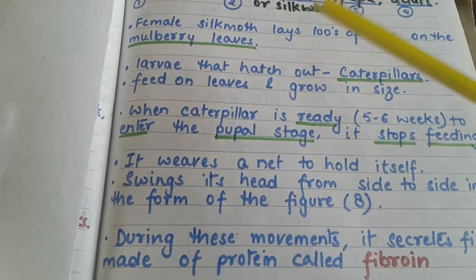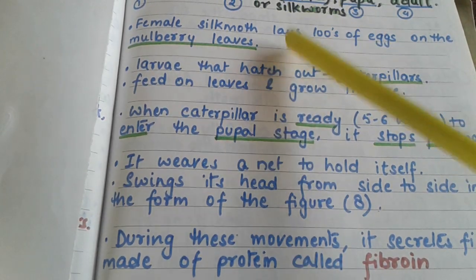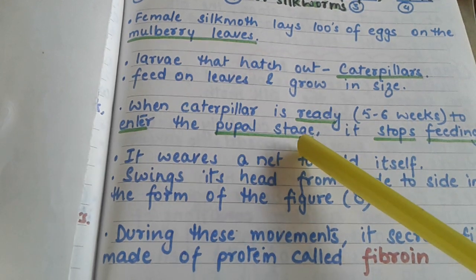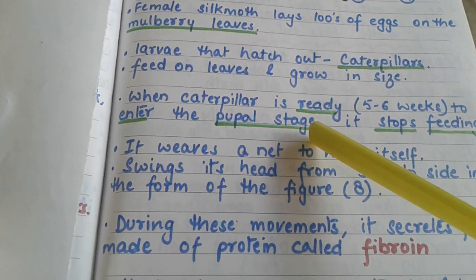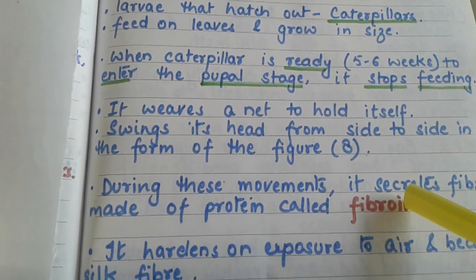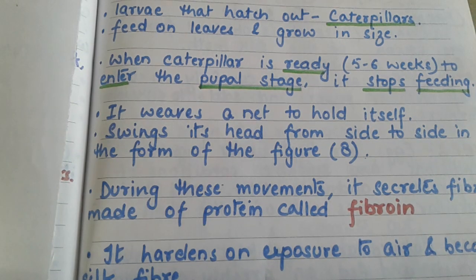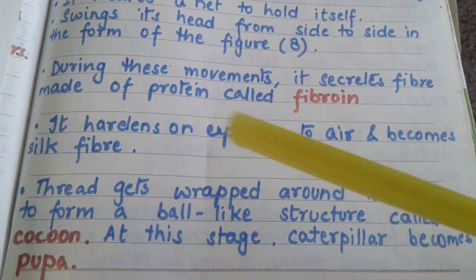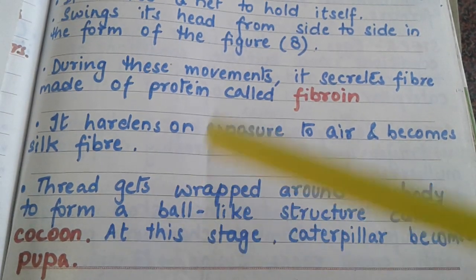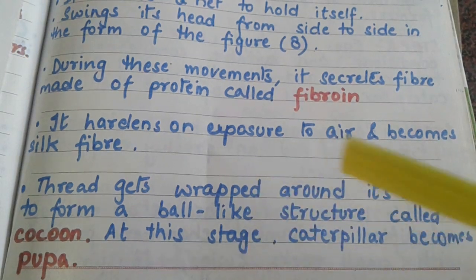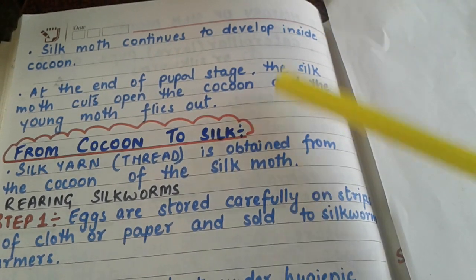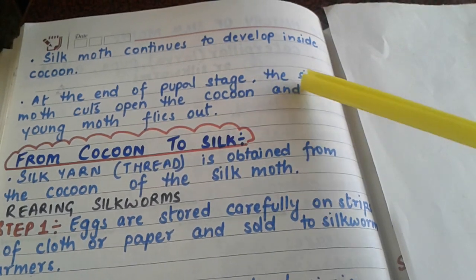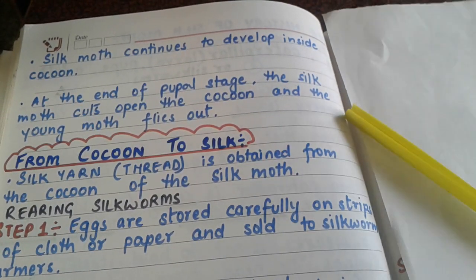Let us revise: first, laying of hundreds of eggs; second, the caterpillar coming out of the eggs; third, before entering the pupal stage it weaves a net and swings its head, secreting fibroin protein which hardens on exposure to air giving us silk fiber; it then forms an oval structure — the cocoon — where the caterpillar becomes pupa; the moth develops inside and cuts open the cocoon to fly away.